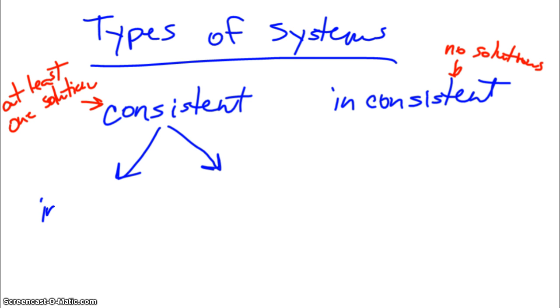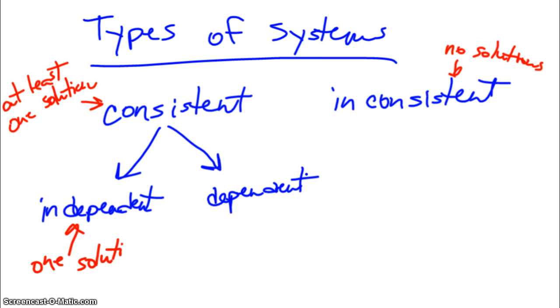And those two types are independent and dependent. If the system is independent, that means there is exactly one solution. And if it is dependent, that means there are infinitely many solutions.